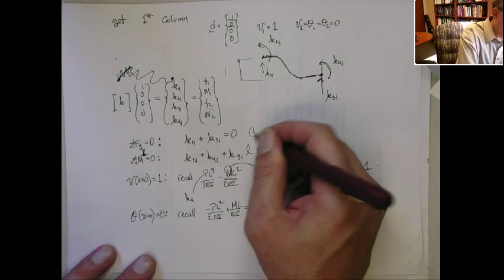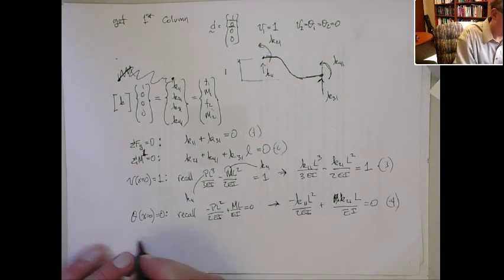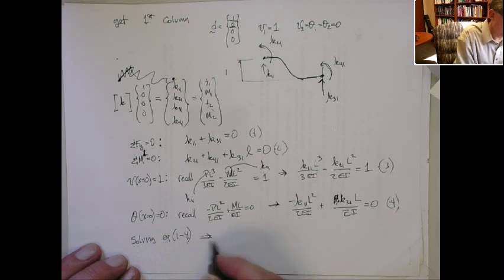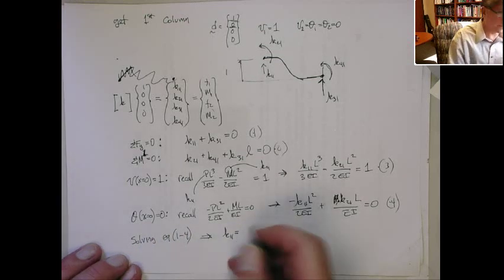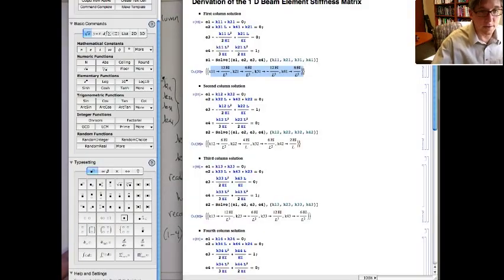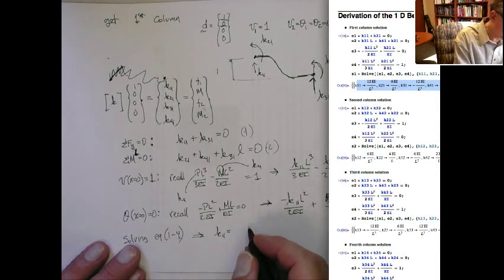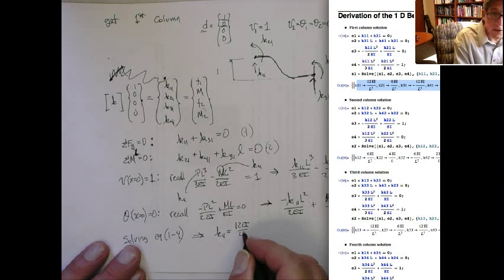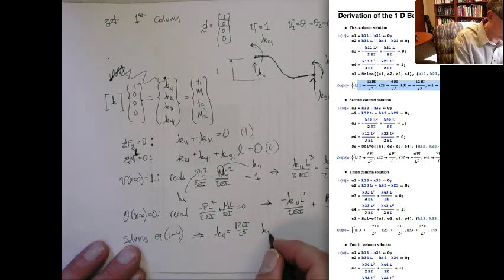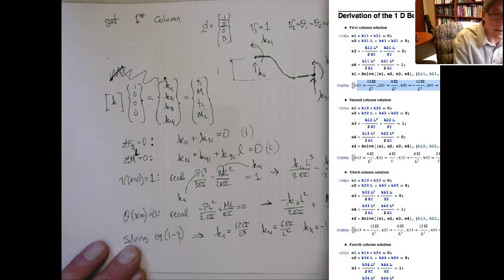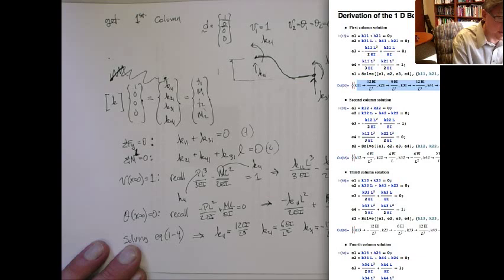Okay, so that is the solution. So basically you solve equations one through four. So solving equations one through four, we can get that K11 is equal to, well let me pull that Mathematica thing up again, put it to the side. I don't need this anymore. K11 is 12 EI on L cubed, which is what we said it was in class. K21 is equal to 6 EI on L squared, and K31 is equal to 6 EI on L squared.